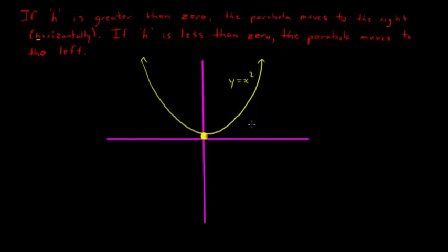Now, if I want to move this horizontally, if I want to move it horizontally to the right, h must be greater than zero, it must be positive. So if I had something like y equals, and here's what you have to remember, it's x minus h, all in brackets, and then squared.